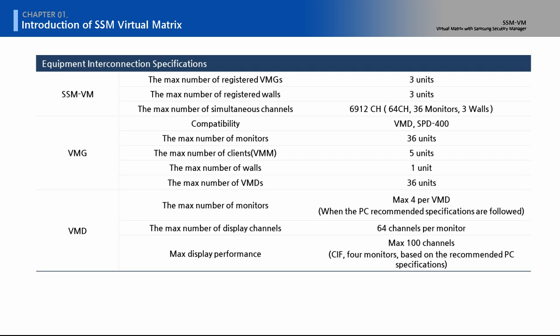One VMG can control one video wall. It can also manage up to 36 monitors and 36 VMDs. One VMD can be connected with up to 4 monitors, displaying up to 64 channels with 1 monitor and 100 channels with 4 monitors.